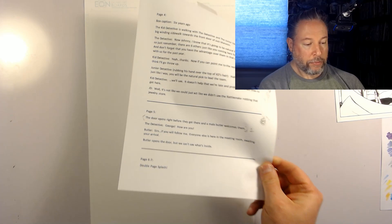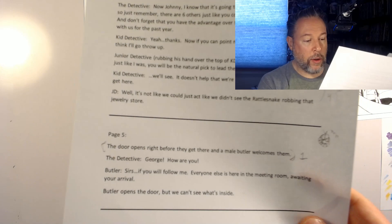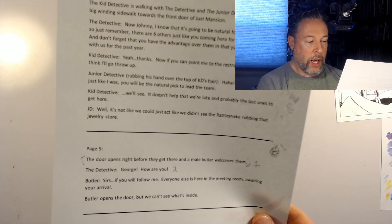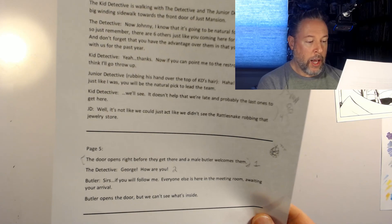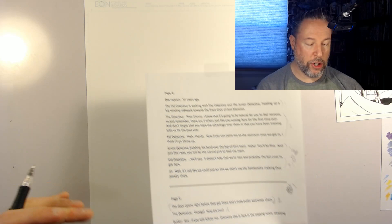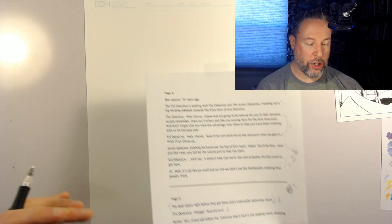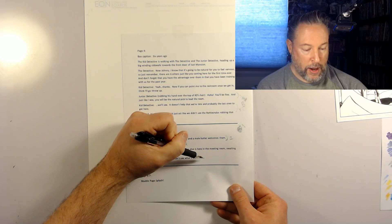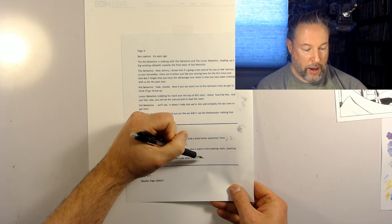So that first section — the door opens — is going to be panel number one. Then the character says 'George, how are you?' so we flip the camera to now see the figure who opened the door — that's panel two. Then 'if you follow me, everyone else is in the waiting room,' so they're walking across a foyer toward big double doors — I'm thinking a shot from up above looking down onto a checkered floor, seeing the top of them walking across — that's panel three. And panel four will be the butler starting to open the double doors, with a crack between them but we won't see what's behind.